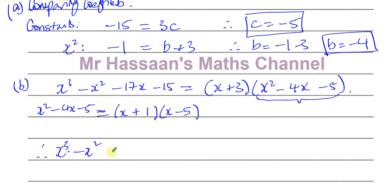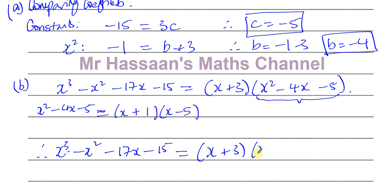Therefore the full factorization is: x cubed minus x squared minus 17x minus 15 equals (x plus 3)(x plus 1)(x minus 5). We can do a quick check: 3 times 1 times minus 5 gives minus 15, which matches the constant term.